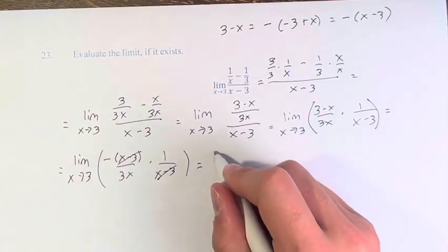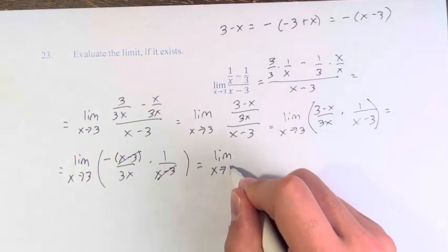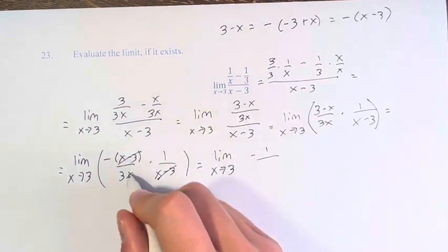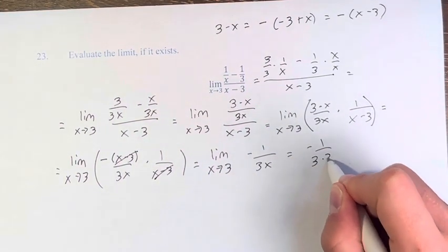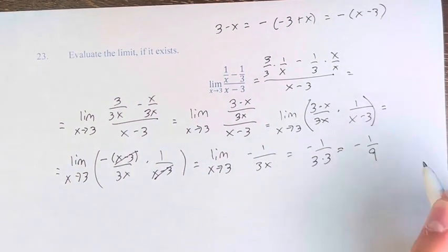x minus 3 cancels. We're left with the limit as x approaches 3 of negative 1 over 3x. Now we can plug in 3 to get negative 1 over 3 times 3, negative 1 over 9.